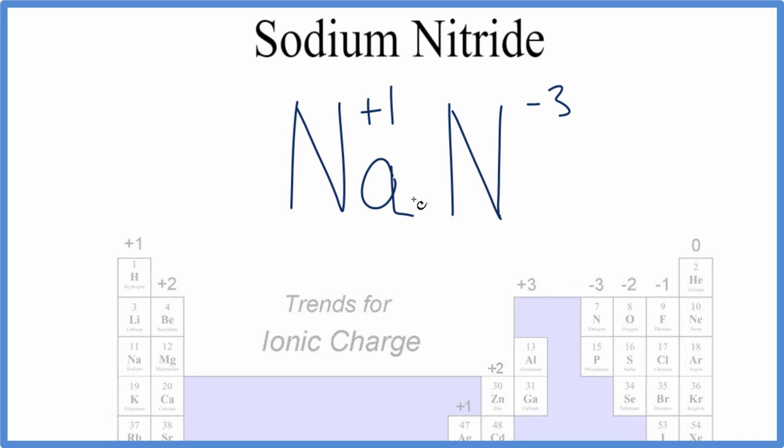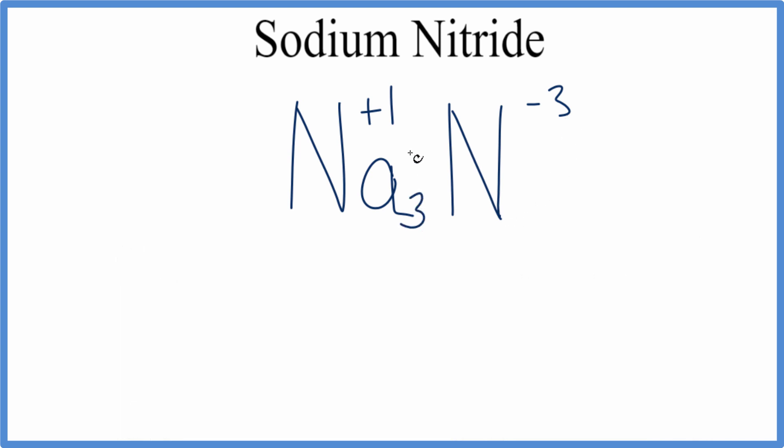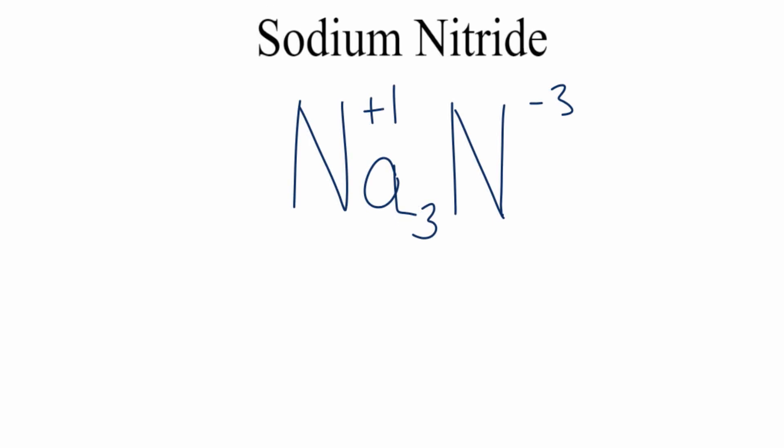What I could do, though, if I had three sodium atoms, three times plus-one, that'd give me plus-three, and that would cancel out the minus-three. And that would make Na3N the formula for sodium nitride.